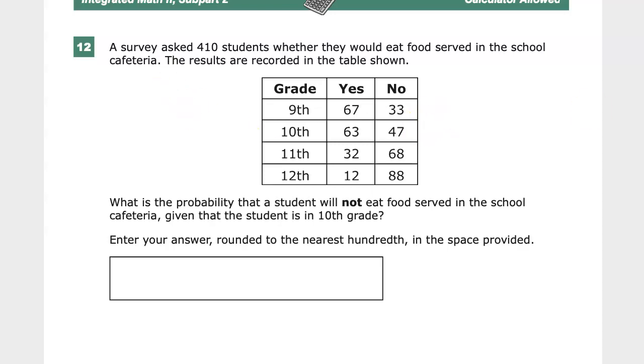What is the probability, so this is a probability question, that a student will not eat food served in the school cafeteria, given that, given is a big important word here, that the student is in 10th grade. Enter your answer rounded to the nearest hundredth in the space provided. I'll give you a little spoiler here, there's a visual way that you can do this specific problem because of how they've broken out all the data, but I'll get to that a little bit later.